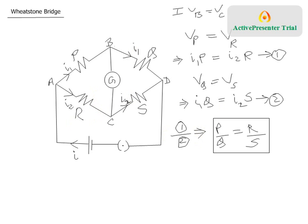So we can make a statement: if the ratio P/Q equals R/S, then no current will flow between B and C. This is called the condition for balance. You adjust resistors P, Q, R, S until it is balanced. The galvanometer needle will show zero deflection when balanced, confirming P/Q = R/S. We will implement this using the meter bridge apparatus in the next video.